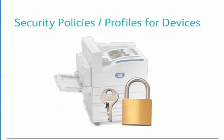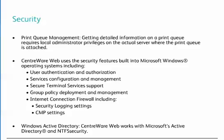Next, we'll cover security policies and setting profiles for devices. With regards to print queue management, getting detailed information on a print queue requires local administrator privileges on the actual server where the print queue is attached. Centerware Web uses the security features built into Microsoft Windows operating systems, including user authentication and authorization, services configuration and management, secure terminal services support, group policy deployment and management, internet connection firewall, including security logging settings and ICMP settings.